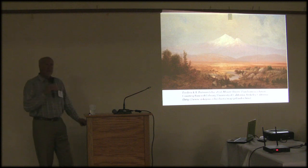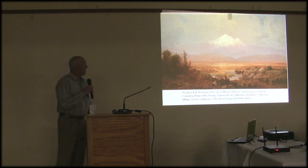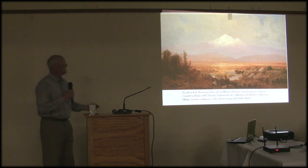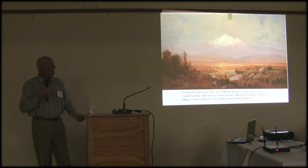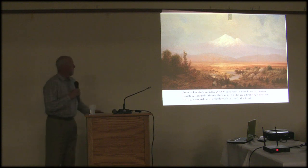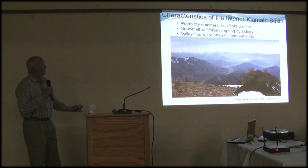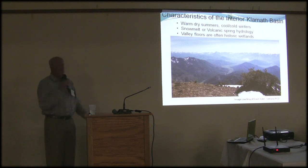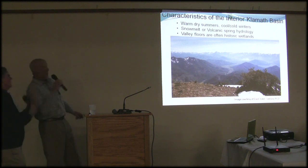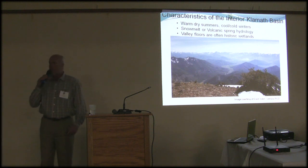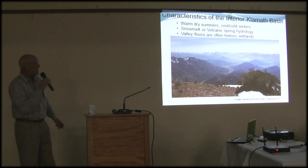The environment historically was idyllic, as illustrated in this painting from the 1870s — not only for white settlers coming to the area, but also as indicated for coho salmon. Some of the key characteristics of the interior Klamath basin include warm dry summers, cool cold winters, and very importantly, the snowmelt and volcanic spring hydrology which dominates these systems.